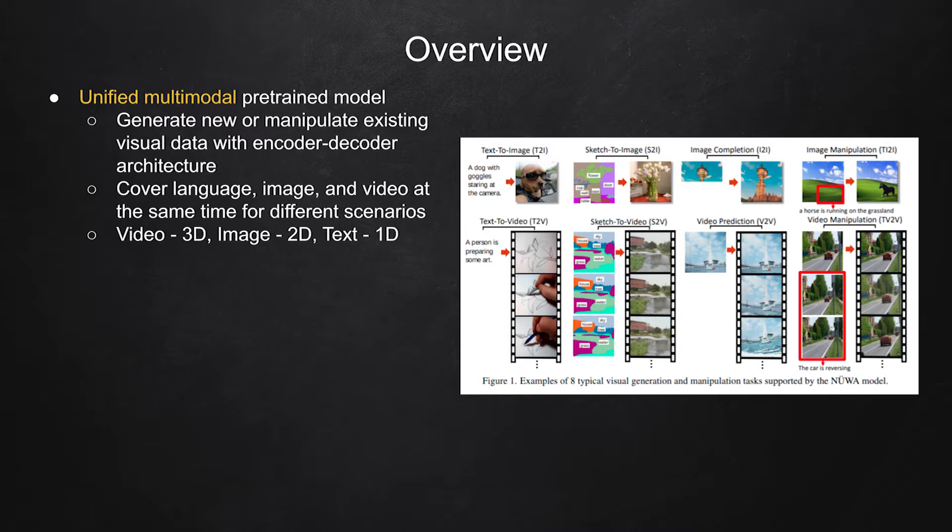In order to handle language, image, and video at the same time, authors propose a 3D transformer encoder-decoder framework. It deals with videos as 3D dataset, handles text as 1D dataset, and image as 2D dataset.